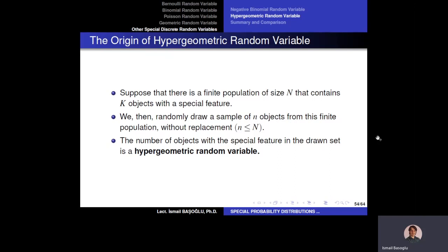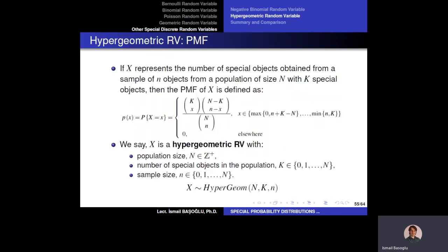We have a parent population of size N, and k of these N objects are special. We randomly select a lowercase n amount from this population. Obviously, lowercase n should be less than or equal to capital N, because we can at most select all of them. The number of objects with the special feature in the drawn set — which is called the sample — is a hypergeometric random variable.